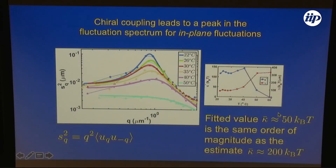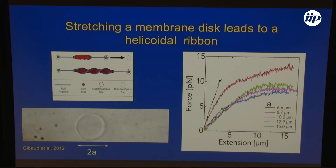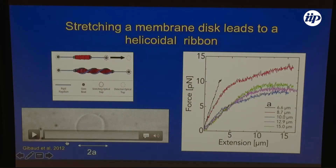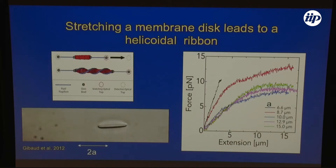Now I'll turn to the second problem: the formation of these ribbons by pulling on them. This is really where we are pushing this model beyond where it should be valid. I'm going to take this model and just see what it predicts for taking a membrane — which is stable and doesn't want to form ribbons — and pulling on it. It does get thin with a radius comparable to the twist penetration depth. It's already being pulled and reoriented, and it's actually already twisted a little bit here, though it's very hard to see.